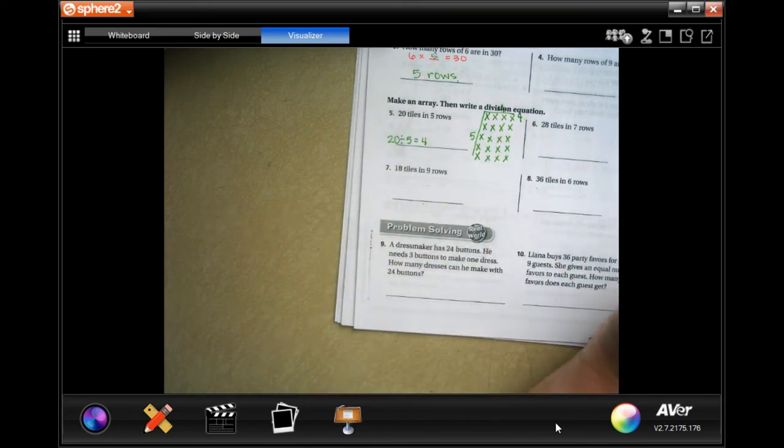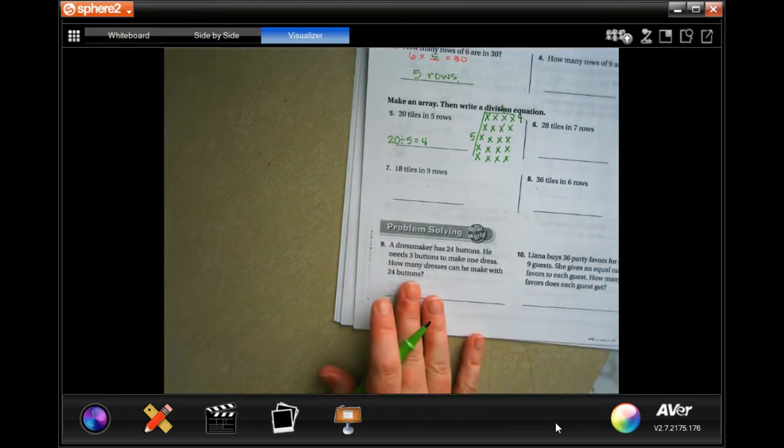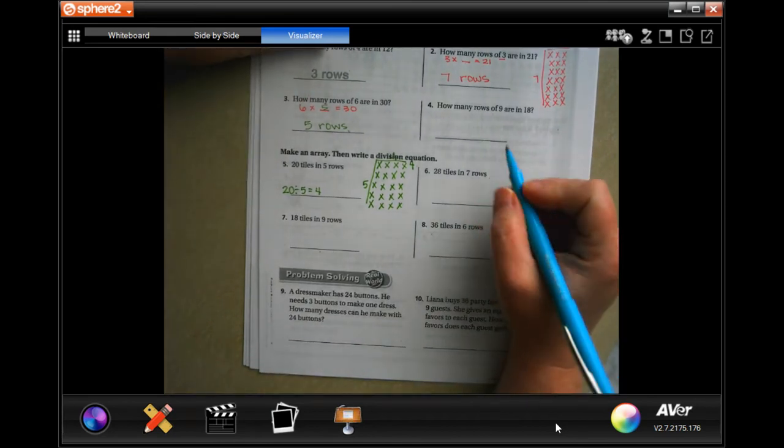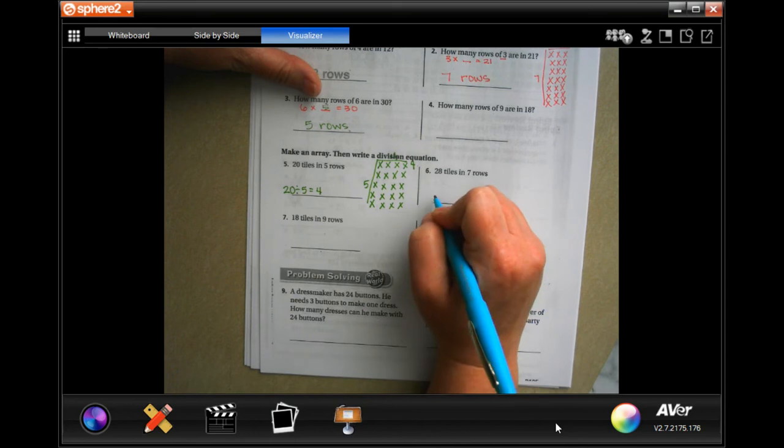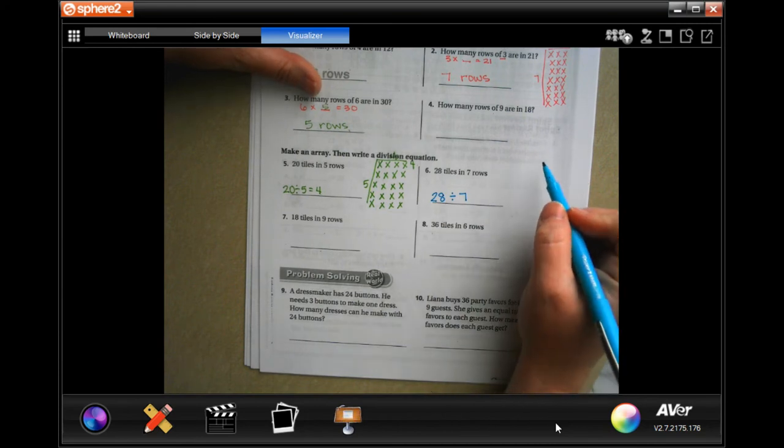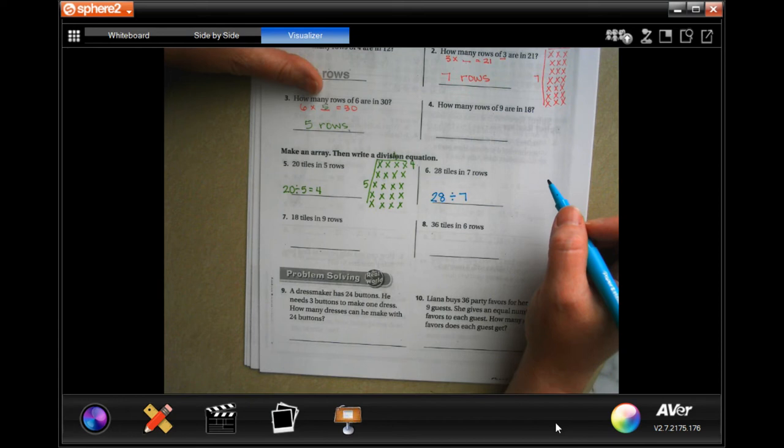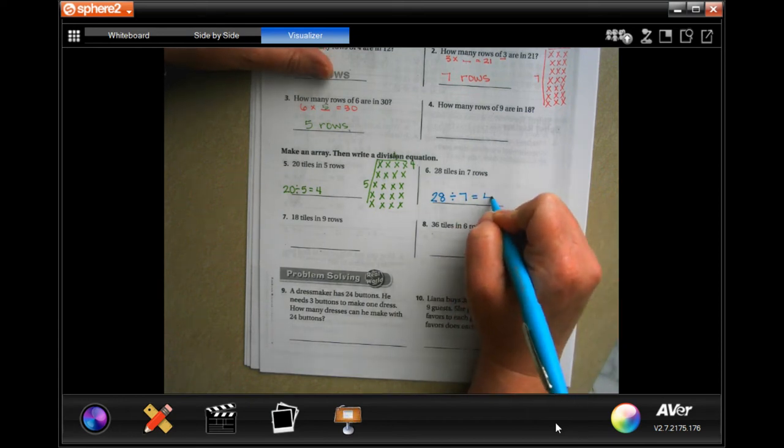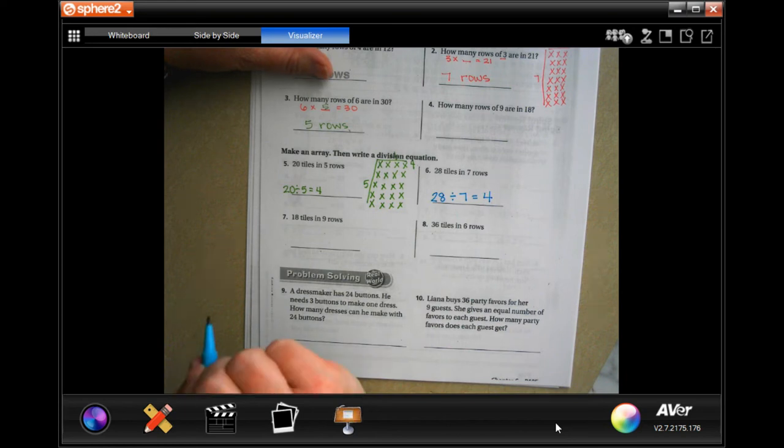Okay, all right, so same thing here. Okay, I'm gonna go 28 divided by seven. Okay, you guys can absolutely do seven rows and see how many rows of seven it takes you to get to 28, but I'm gonna go, I know that seven times four is 28. Okay.